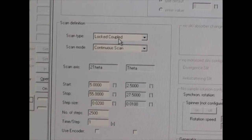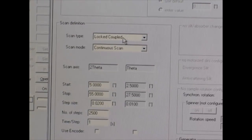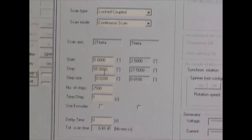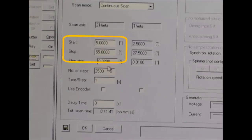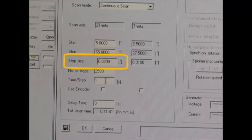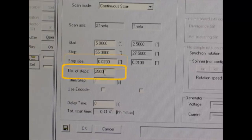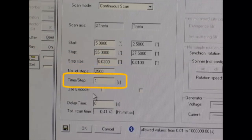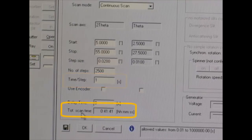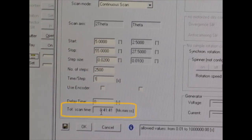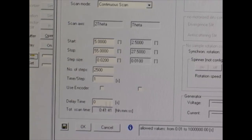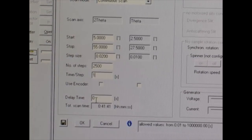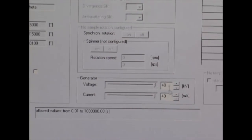Your scan type is locked coupled and continuous. This is the standard way to do it. What this means is that your detector will be following at 2 theta from your sample. You put in your start value and your stop value in 2 theta. Your step size is also in 2 theta. It calculates the number of steps. You put in your time and it will calculate the total scan time. This is important because you want to know how long your scan is going to take and that's an important thing to know when you're reserving your time for the instrument. Also, you can see that generator voltage and current, the default is 40 and 40, which is the maximum.